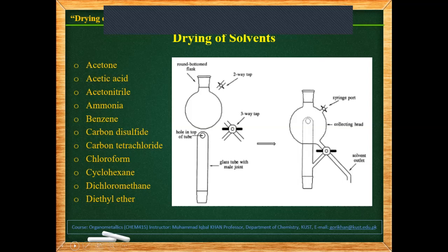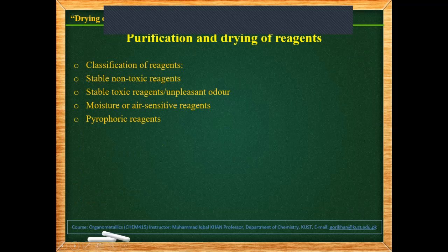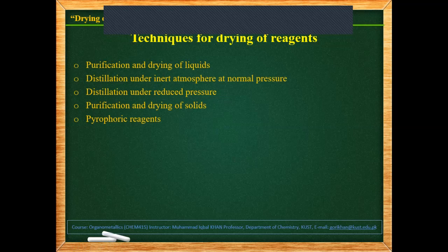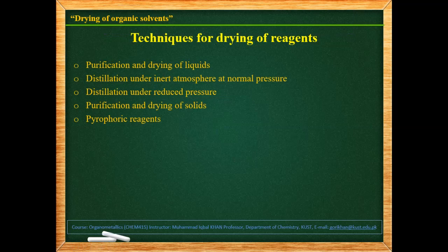Here is a list of solvents usually used during manipulation of air-sensitive organometallic compounds. Reagents are classified into four types: stable non-toxic reagents, which you encounter in daily life; stable toxic reagents with unpleasant odor; moisture- or air-sensitive reagents; and pyrophoric substances. Different techniques are used for purifying and drying these substances, including distillation under inert atmosphere at normal pressure, distillation under reduced pressure devoid of air, and purification and drying of solvents and pyrophoric reagents.